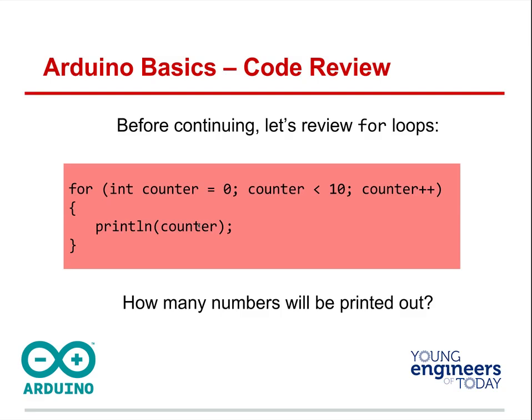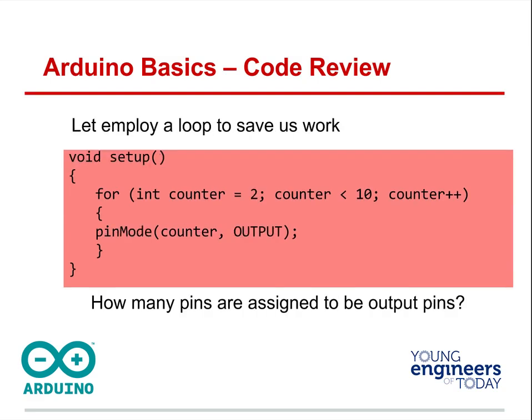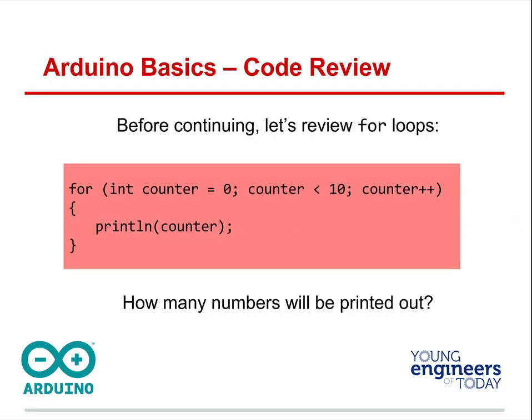The serial monitor would show the counter values. Hopefully you figured out that it prints: zero, one, two, three, four, five, six, seven, eight, nine — because you can't go to 10. That would be 10 numbers because you're starting at zero. Remember in computers we don't like to waste memory space, so we start at zero, not one.